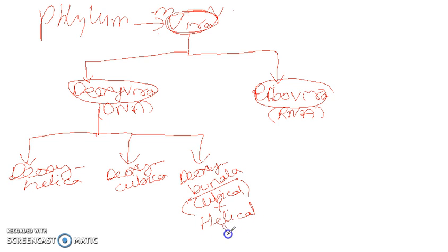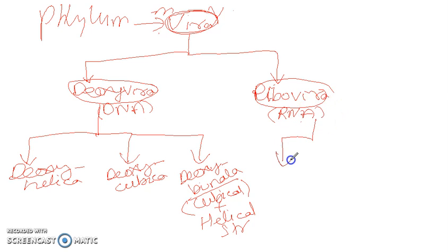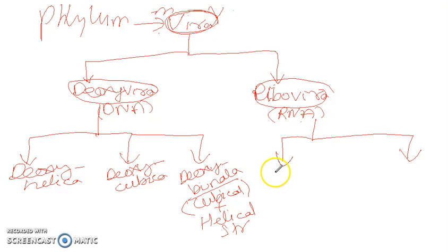So we have Deoxy-helica, Deoxy-cubica, and Deoxy-binala. Binala means expressing both — that is cubical structure plus helical structure. Now this Ribovira is classified into two classes only. The first one is called Ribocubica.